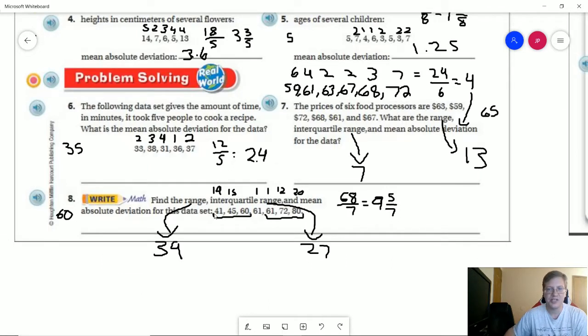Our range is going to go from 80 back to 41, which is going to give us a range of 39.